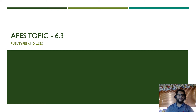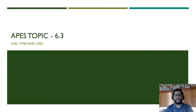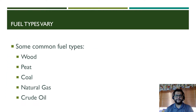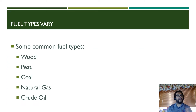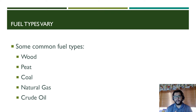Hey guys, this is Mr. V and this is APE's review video, topic 6.3, fuel types and uses. In this video we're going to talk about the different fuel types — some of them are renewable, some are not. Common fuel types include wood, peat, coal, natural gas, and crude oil, and we're going to talk about how those can become energy.